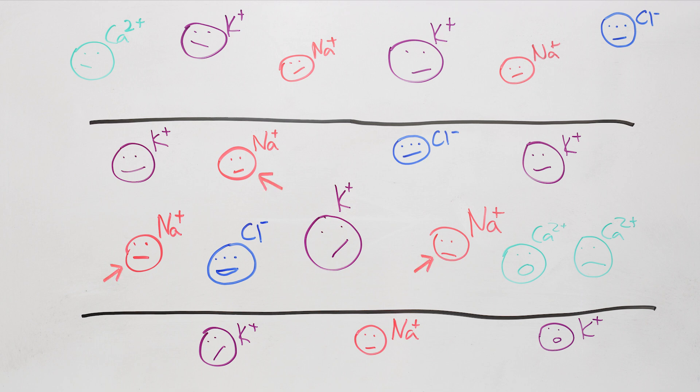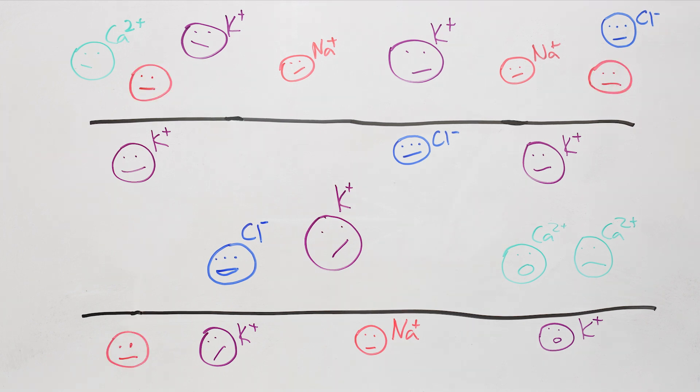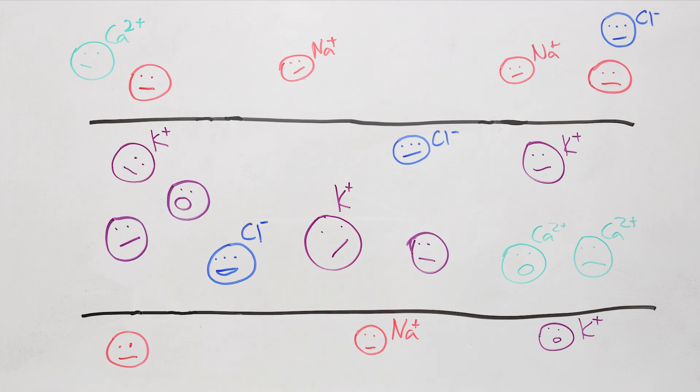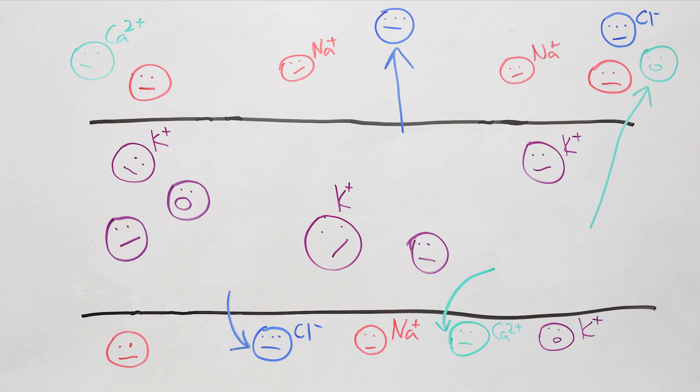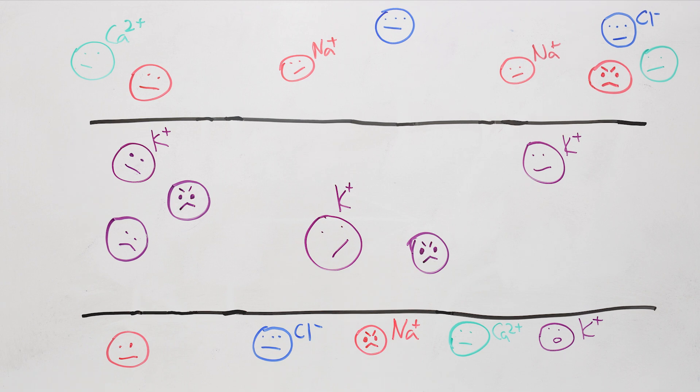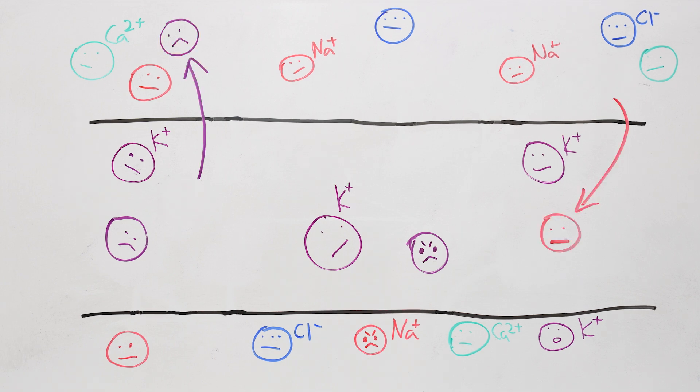Neurons don't like sodium, so they try to pump it out. And they like potassium, so they try to pump it in. And they also don't like chlorine and calcium. The ions, though, aren't happy with being concentrated like that, and so some of them leak back, either back into the cell or back out of the cell.